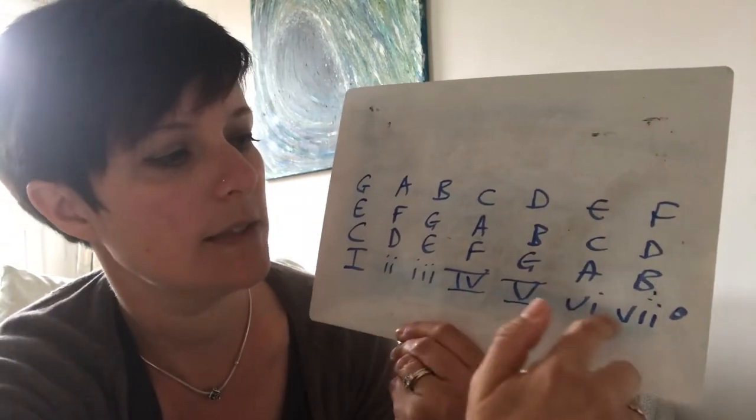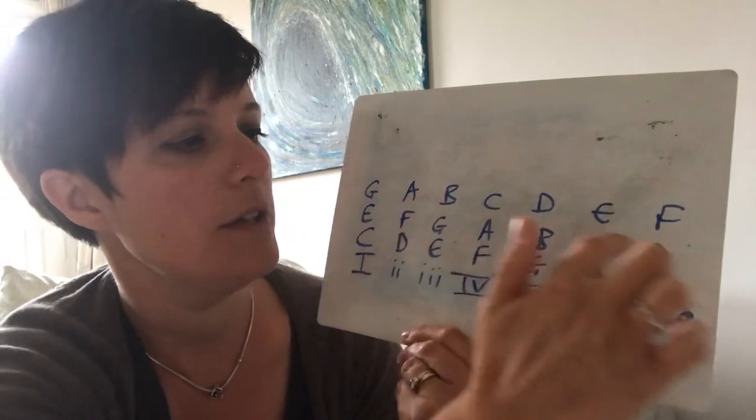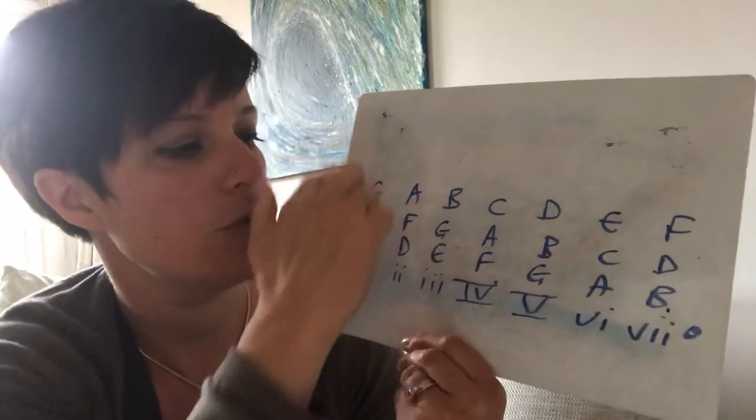So, chord 1, 2, 3, 4, 5, 6, 7. And then write your C major scale, a third and the fifth above them to create the chords.